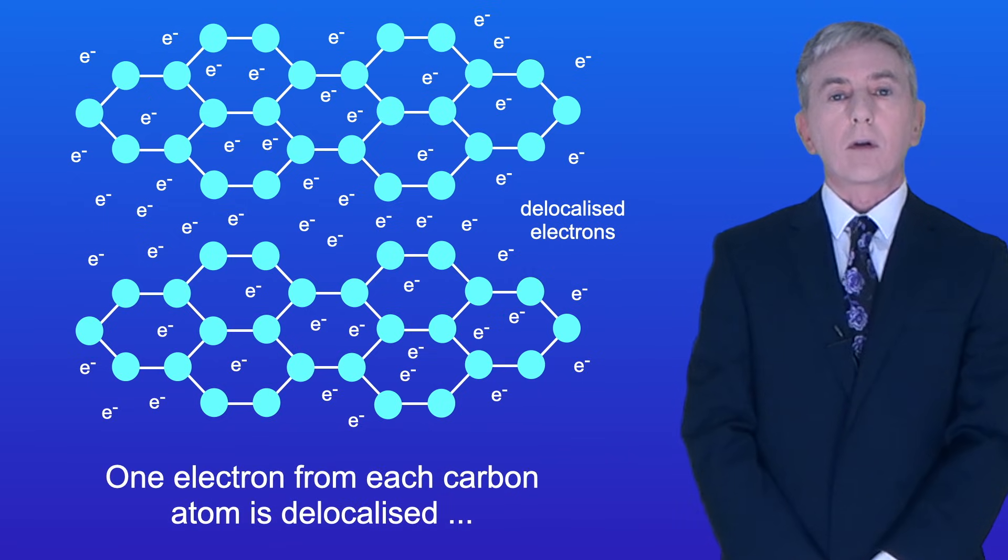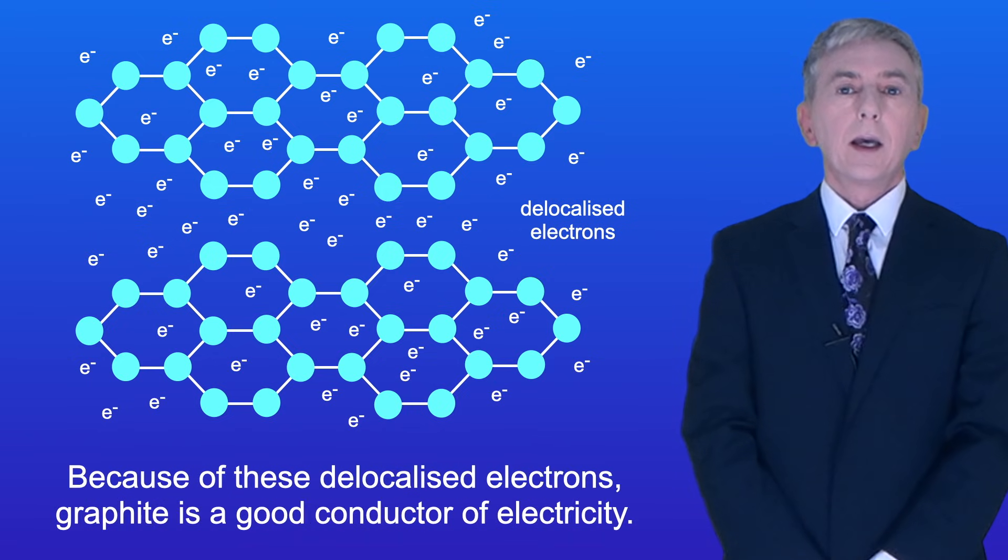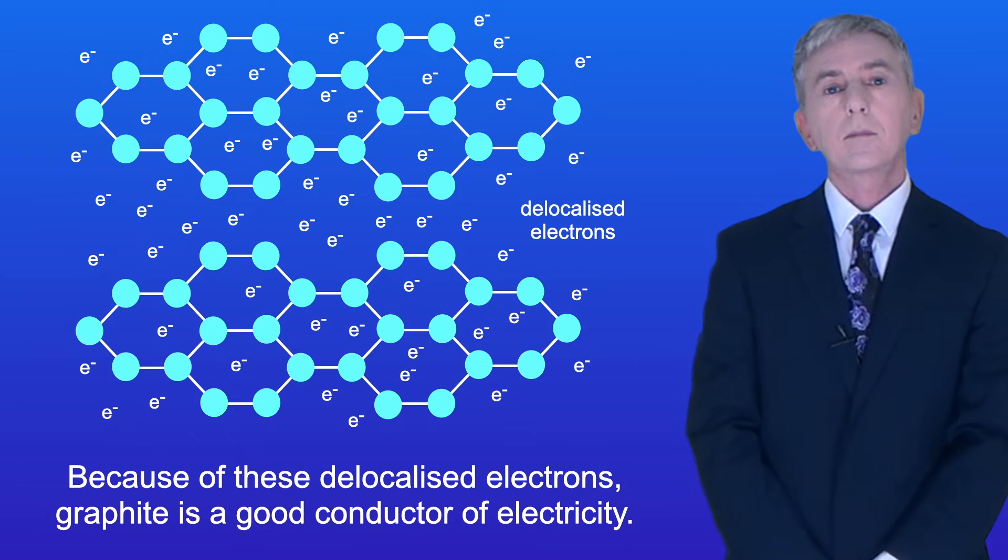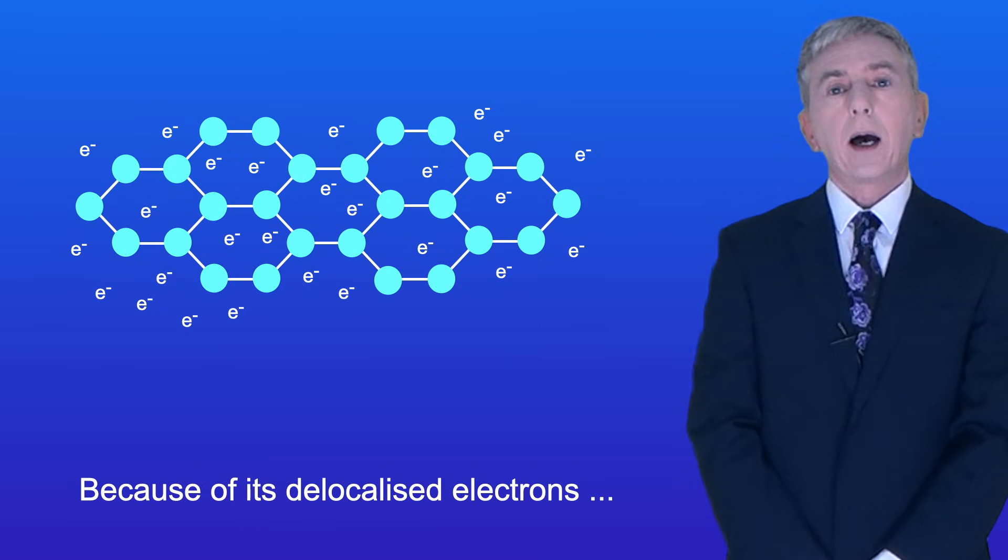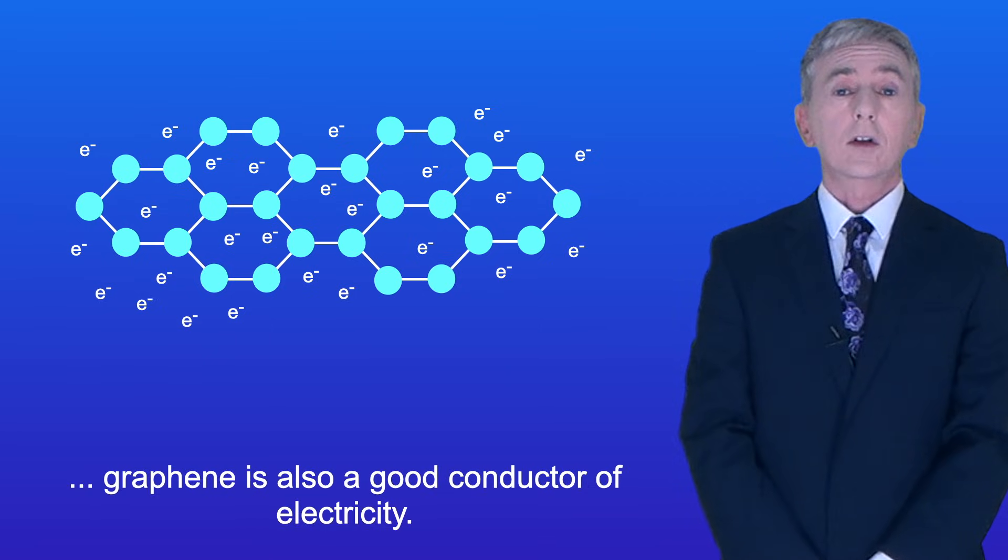One electron from each carbon atom is delocalized and can act as a mobile charge carrier. And because of these delocalized electrons, graphite is a good conductor of electricity. Now a single layer of graphite is called graphene and because of its delocalized electrons, graphene is also a good conductor of electricity.